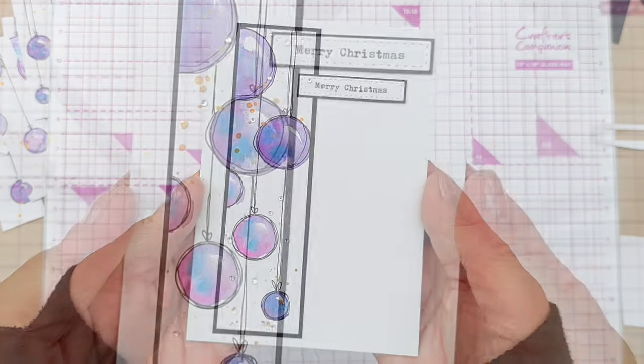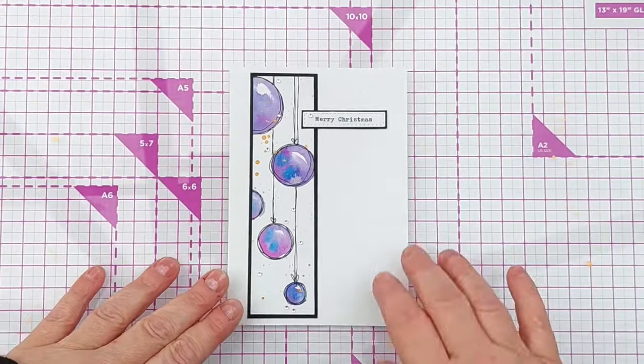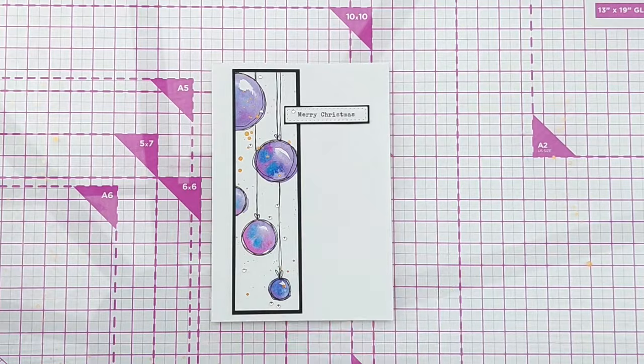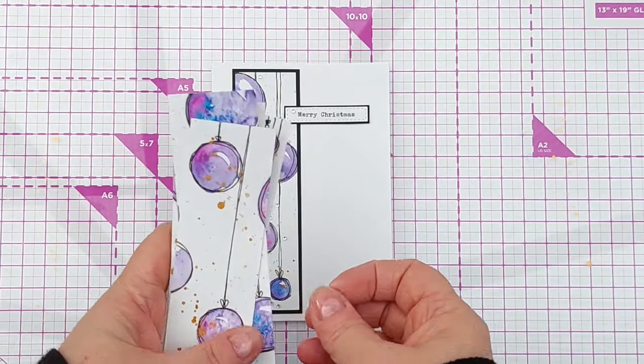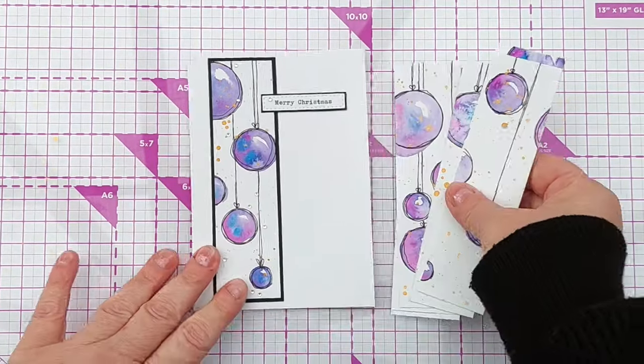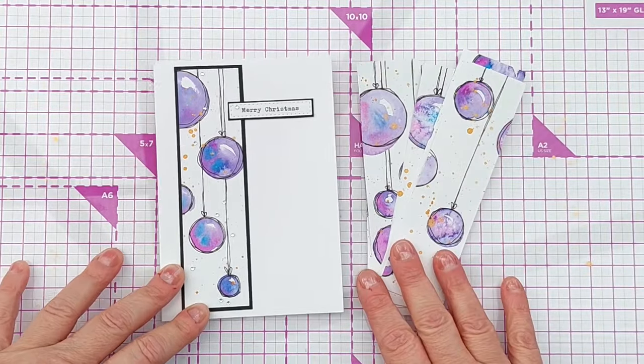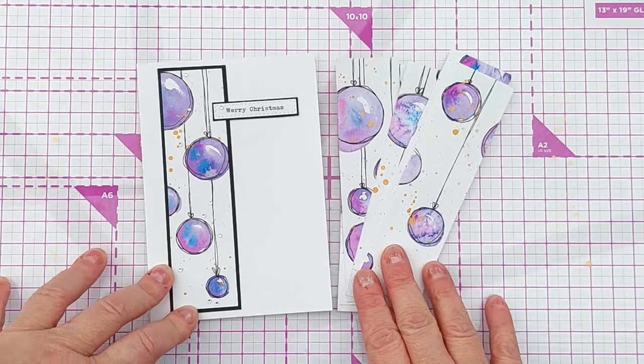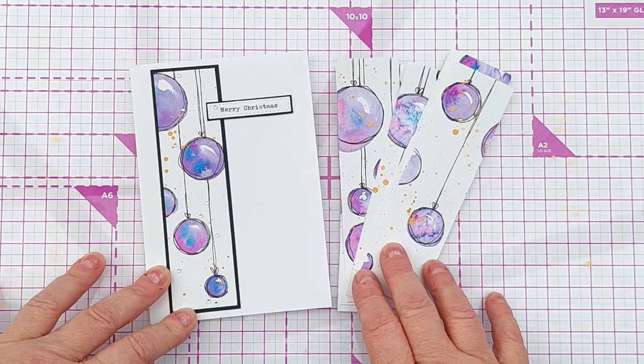So there we have it, a watercolor bauble Christmas card. Once I've finished filming this video, I will make up the rest of them, probably end up looking similar to this, a similar arrangement of elements on the card blank. So that's it, thanks for joining me today. I hope you've enjoyed this video and I hope to see you back here very soon. Thanks for watching, bye for now.